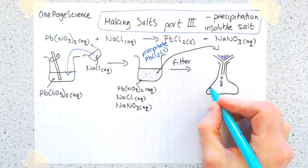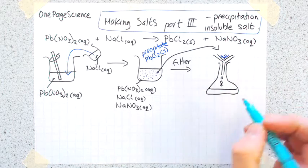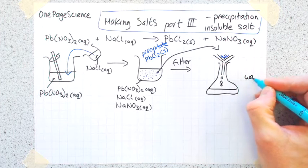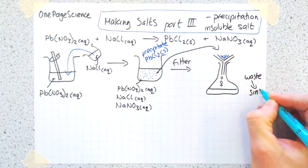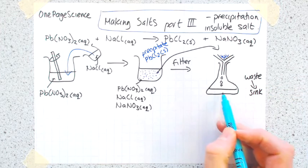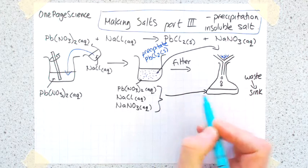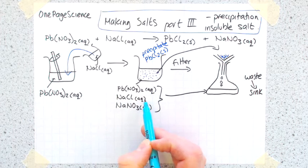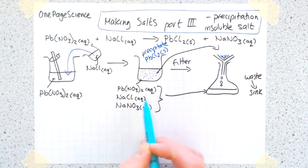What's going to drip through is all the things that we don't want. In this example, what's down the bottom is the waste and that can go down the sink - we're not interested in that bit. What's in there is all the solutions: any bits of silver nitrate, sodium chloride, and sodium nitrate.